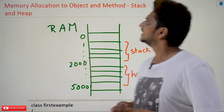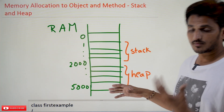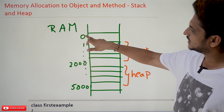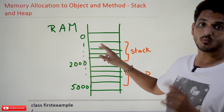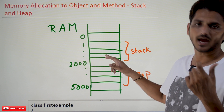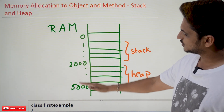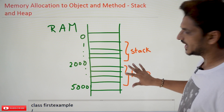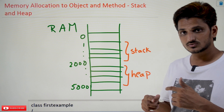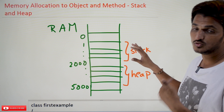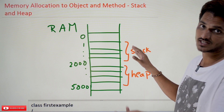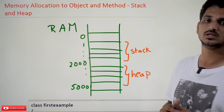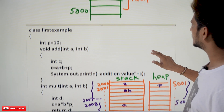Coming to today's class. We already know from our previous classes this is the random access memory organization we are using. In our random access memory, the 0th line, 1st line, 2nd line — each line stores 1 byte of data, which means 8 bits. In Java, they are going to allocate stack space and heap space. We are going to understand what is stack space, in which situations stack is used, and what is heap space and for what purpose we are using it. Let's take the example and understand step by step.